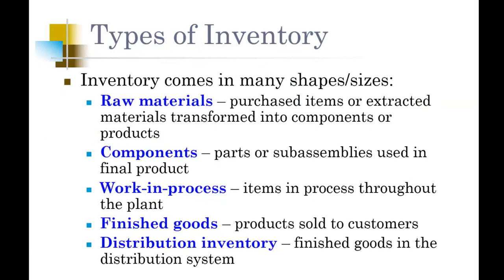We're going to frame this discussion based on toilet paper. Whenever we have toilet paper, there are different inventory types that go into that roll of toilet paper that you pick up at your local grocery store or Walmart. It begins with the raw materials — those goods that make up that finished good. For a simple roll of toilet paper, the raw material is going to be the pulp that makes the paper.